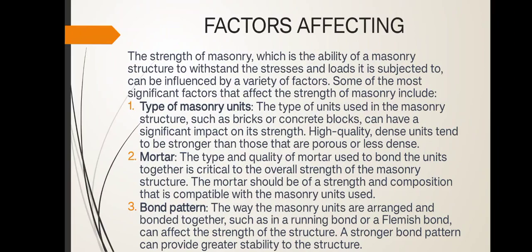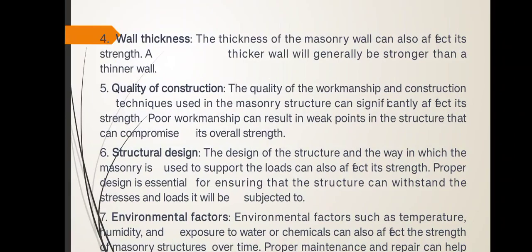The mortar should have a strength and composition that is compatible with the masonry units used. Bond pattern: The way masonry units are arranged and bonded together, such as running bond or Flemish bond, can affect the strength of the structure — a stronger bond pattern can provide greater stability. Wall thickness: The thickness of the masonry wall can also affect its strength; a thicker wall will generally be stronger than a thinner wall. Quality of construction: Poor workmanship can result in weak points in the structure that can compromise overall strength.